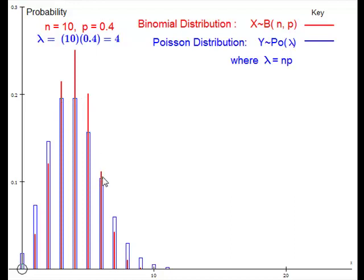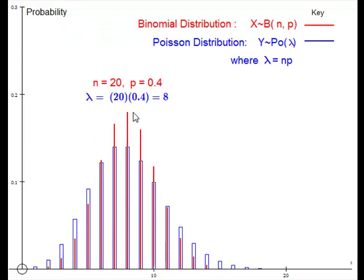Now if I change the value of n to 20 but keep p at 0.4, these are the resulting probability graphs. As you can see, the probabilities are still different. The graphs are not similar.